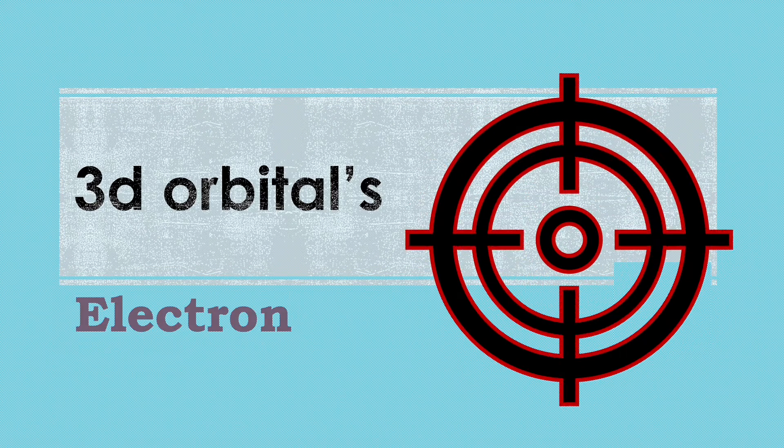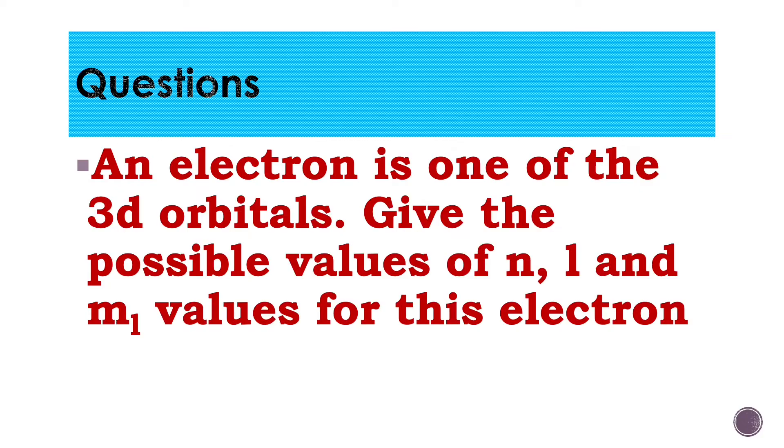Welcome to Aurora Chemistry for everyone. In this video, we are going to analyze the possible values of n, l, and ml for the electrons which is in the 3d orbitals.